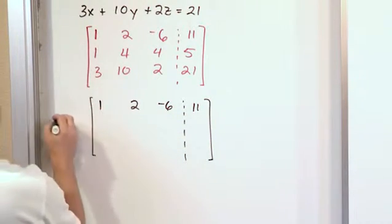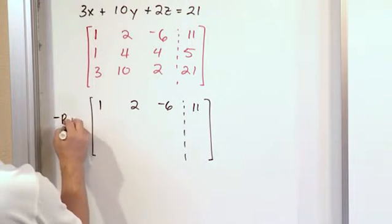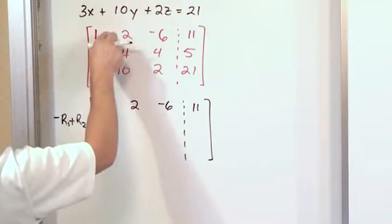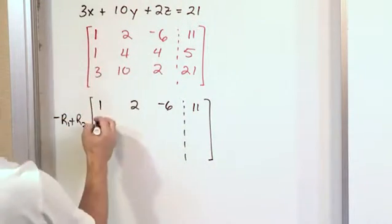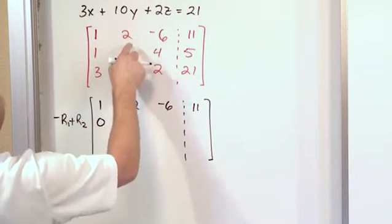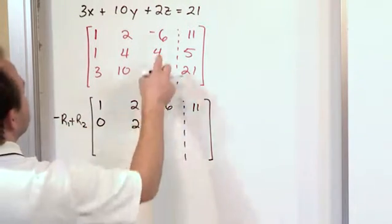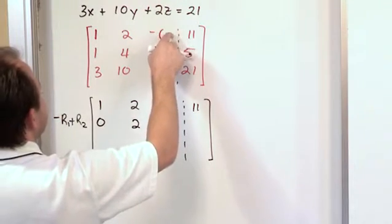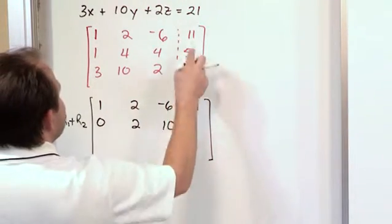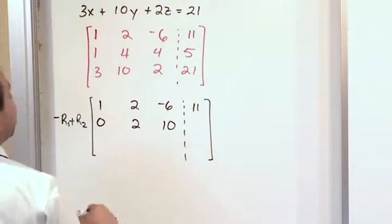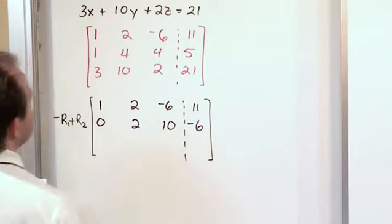And then I want to get a 0 here so I'm going to say negative row 1 plus row 2. I'm multiplying this row times negative 1 and adding it. So I'm going to get a 0 here. Negative 2 plus this would give me 2. Negative times this would give me 6, so then 6 plus 4 is 10. And then negative 11 plus this guy is going to give me negative 6.